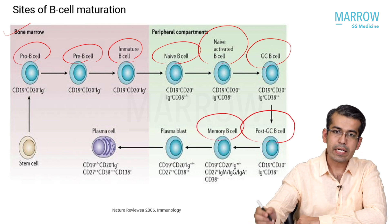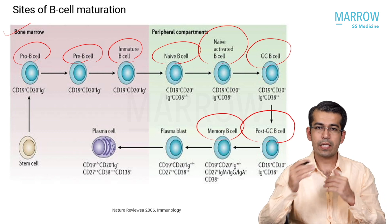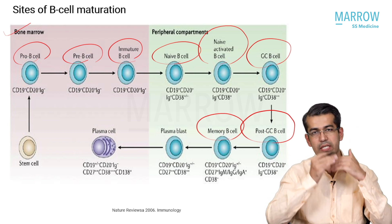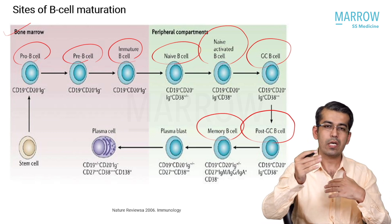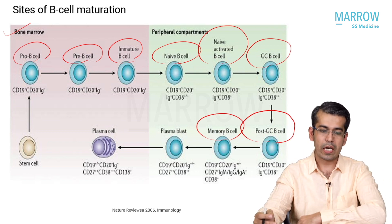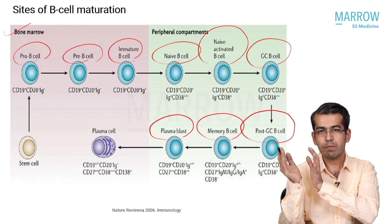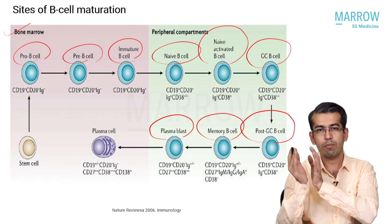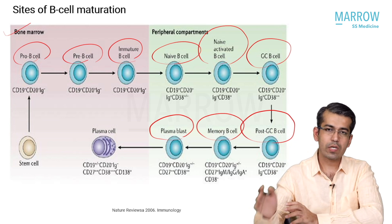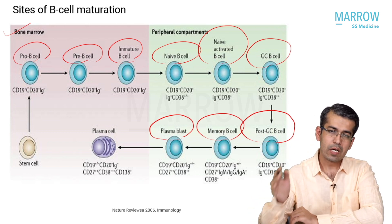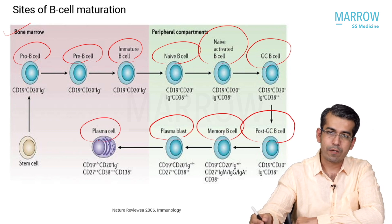After exposure to the antigen, it gains memory for that specific antigen so that whenever it encounters that antigen in the future, it will mount an immune response much more rapidly than a naive B cell. It then becomes a plasmablast, and these plasmablasts - post-germinal center mature B cells that have been exposed to the antigen - home back to the bone marrow where they become plasma cells.